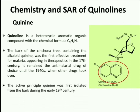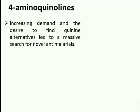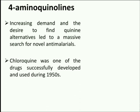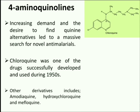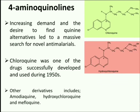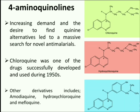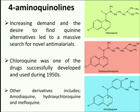Quinine remained the antimalarial drug of choice until the 1940s when other advanced drugs took over. The active principle quinine was first isolated from the bark during the early 19th century. Due to the increasing demand on cinchona supplies and the desire to find alternatives with potent action and lesser side effects, there was a massive surge of novel antimalarials. Chloroquine was one of the first drugs successfully developed and used in the mid-1940s, with its main advantage being effectiveness against erythrocytic forms of the Plasmodium parasite. Other drug candidates belonging to this category are amodiaquine, hydroxychloroquine, and mefloquine.